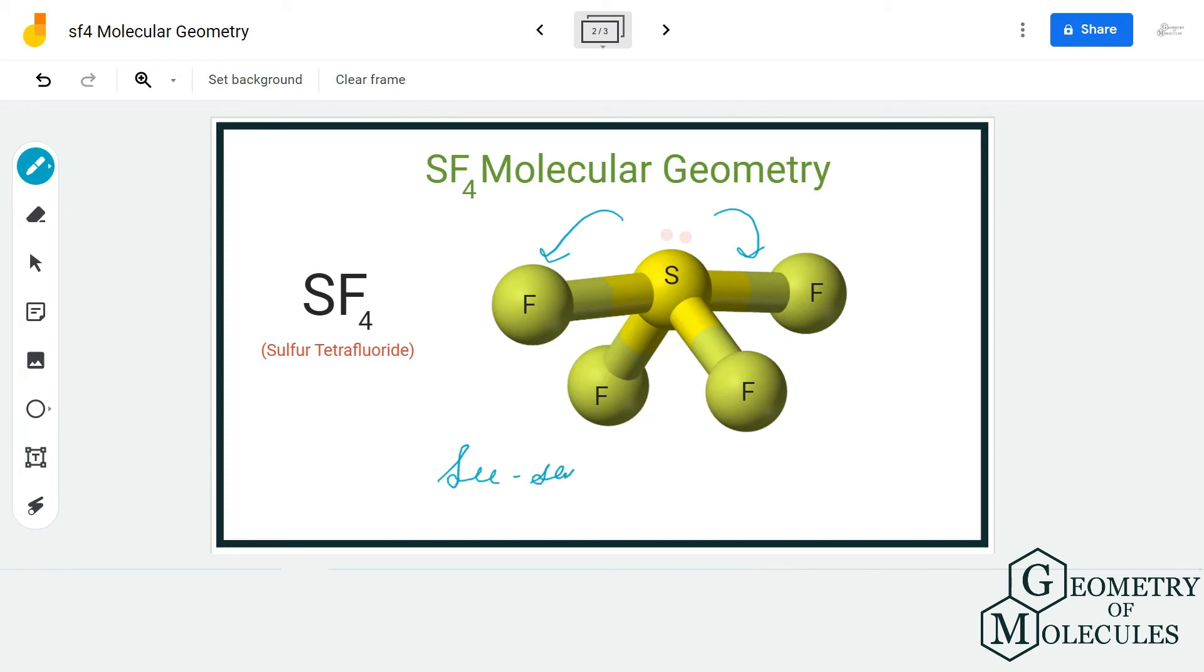You can also confirm it by using AXN notation method. The AXN notation method is the simplest way to determine the molecular geometry of any molecule. Here, the notation would be AX4E1 because there is one lone pair of electrons on the sulfur atom. If you refer to the table for AXN notation, you'll find that this molecule has seesaw molecular geometry.